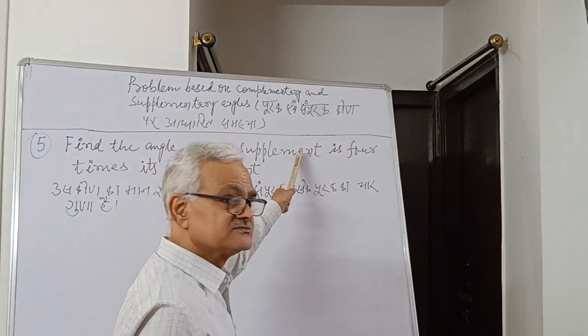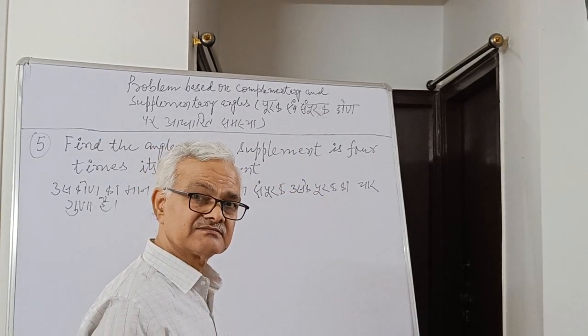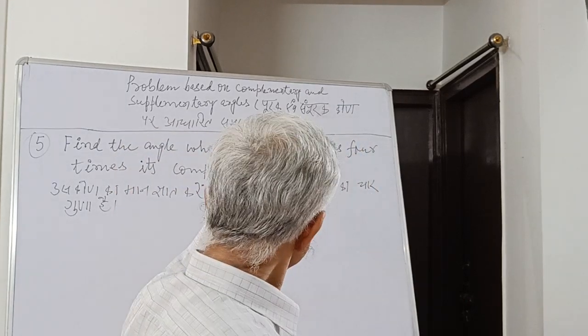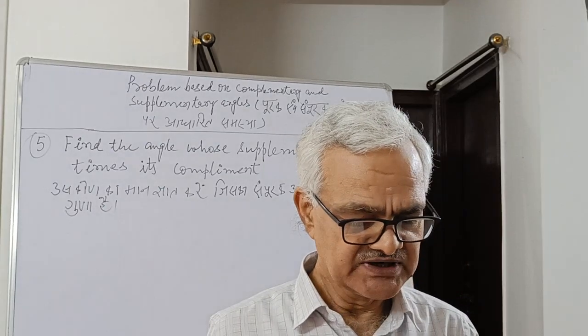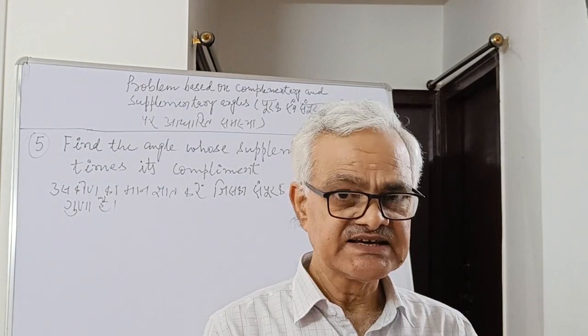Supplement is 180 degrees, complement is 90 degrees. The supplement is four times greater than the complement. Now we have x as the number.